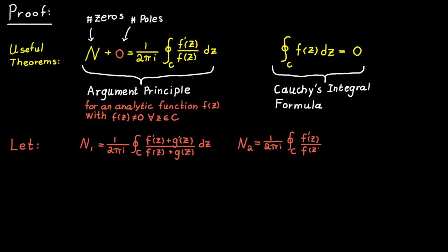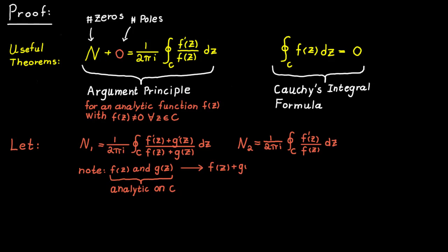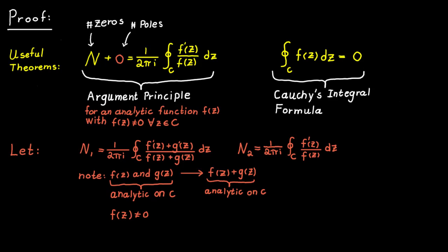We also have to check that f plus g and f are both analytic and not equal to zero on the curve, to use the argument principle theorem. We already know that f and g are both analytic on c, which implies that f plus g must also be analytic on c. We also know that f cannot be equal to zero on c, since the condition requires that the absolute value of g is strictly smaller than the absolute value of f on the curve, which cannot hold if f equals zero at any point on c.